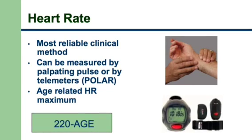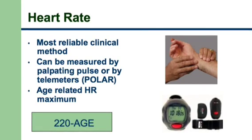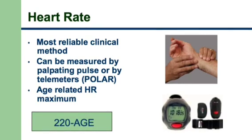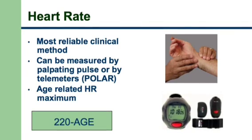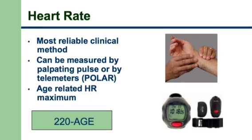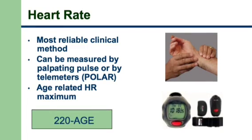Heart rate also correlates with age. There is a formula to calculate the maximum heart rate possible for an individual, called the Karvonen formula. It is 220 minus chronological age. For example, if your age is 30, then the maximum heart rate your heart can achieve is 220 minus 30, which is 190.